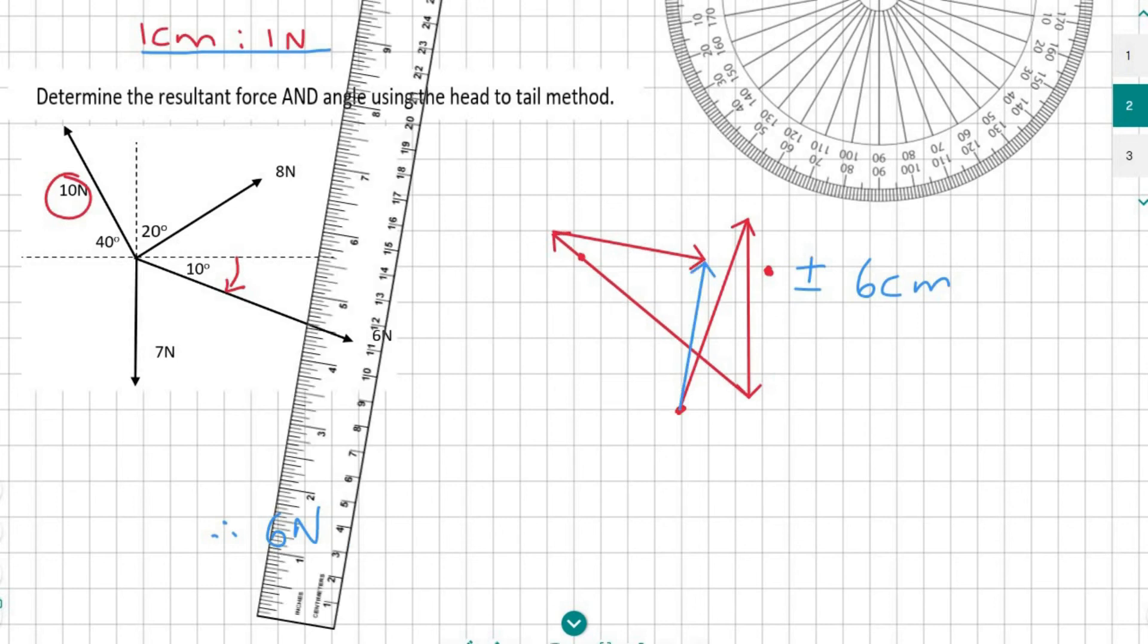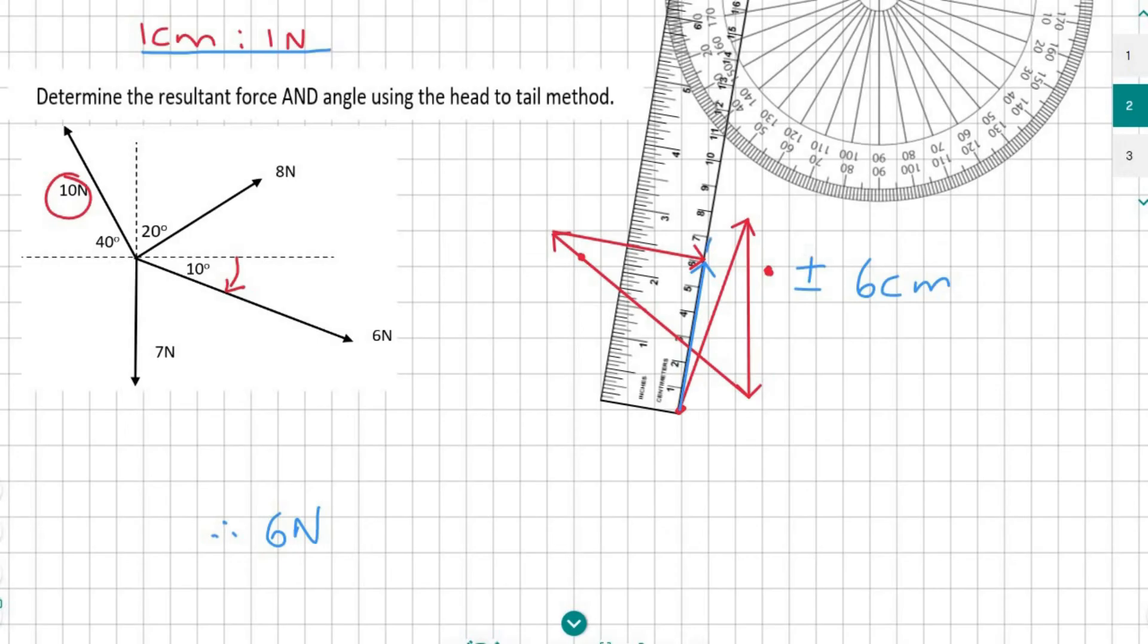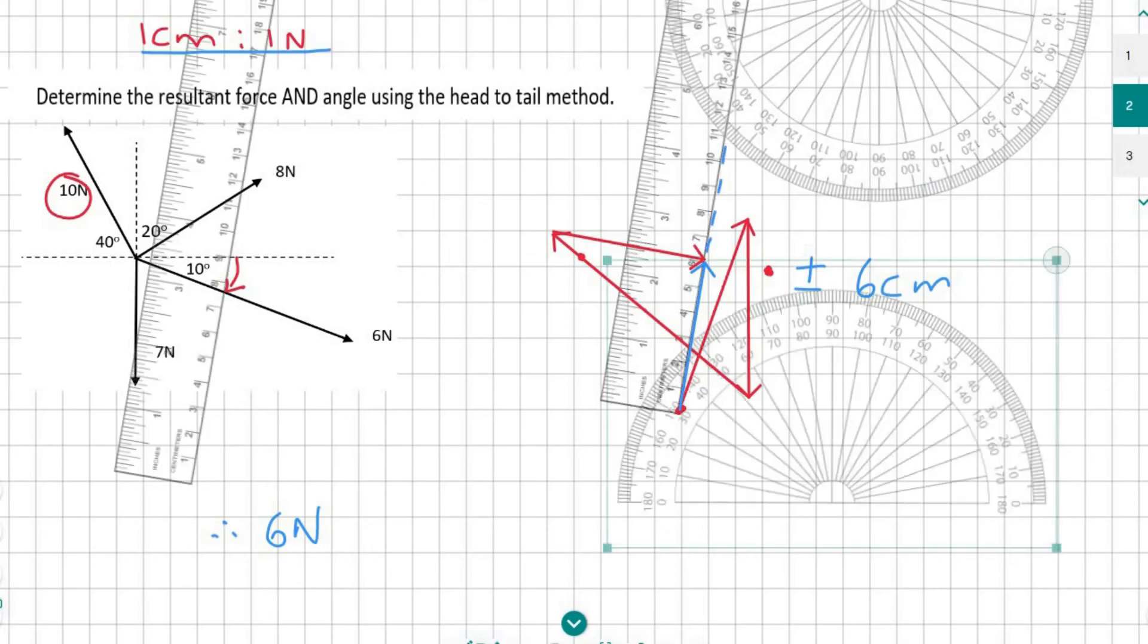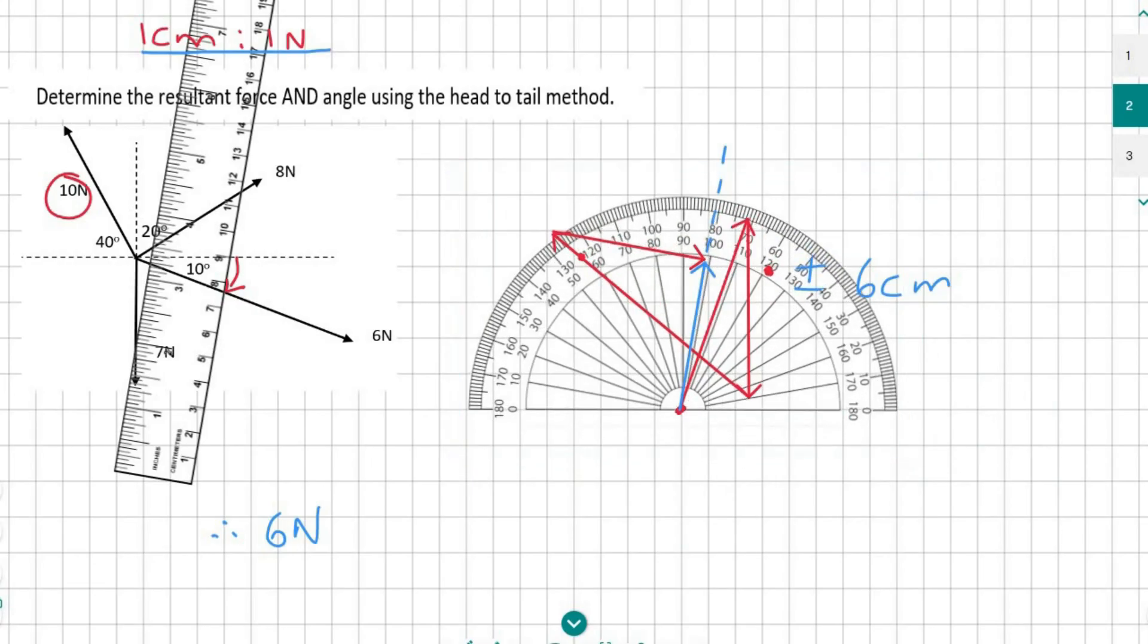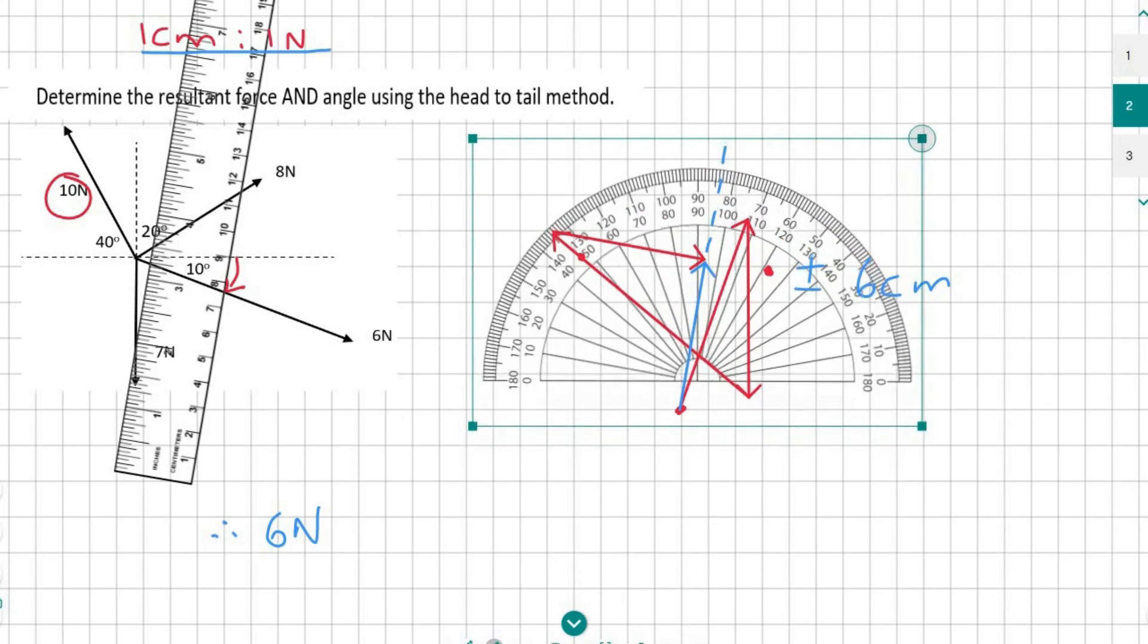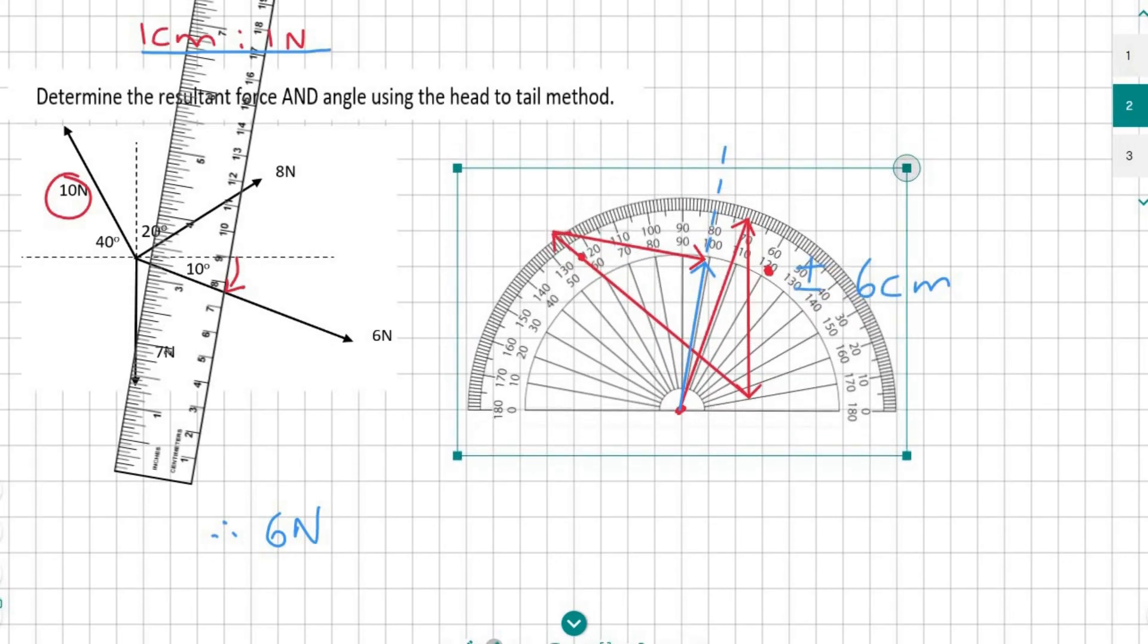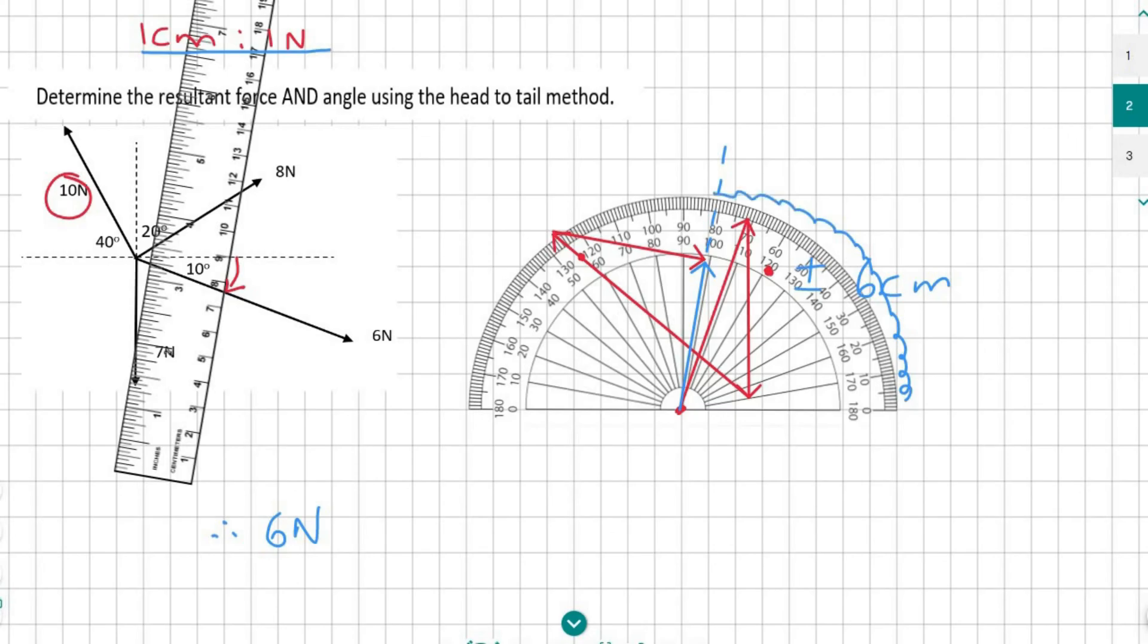But now we are not done. We need to measure the angle. I'm just going to extend this line a little bit so I can easily read it on my protractor. Then I can take the protractor, put it at that starting position, and measure the angle. I can measure this whole angle, and I get about 81 degrees. So you would say 6 newtons at 81 degrees.